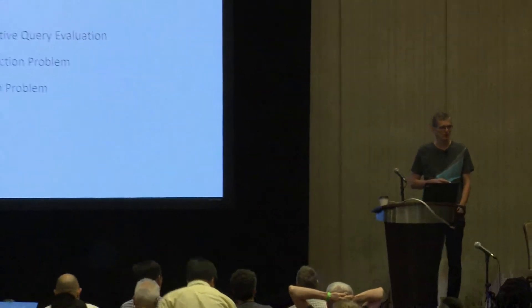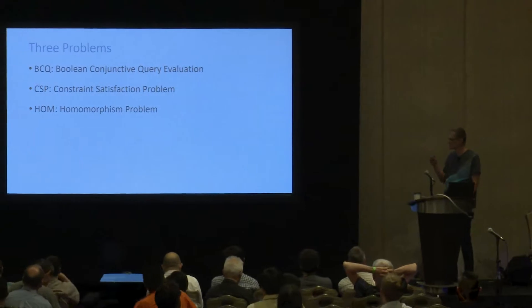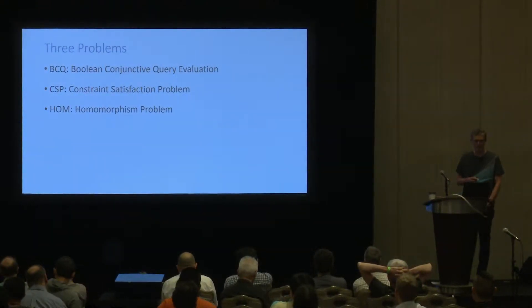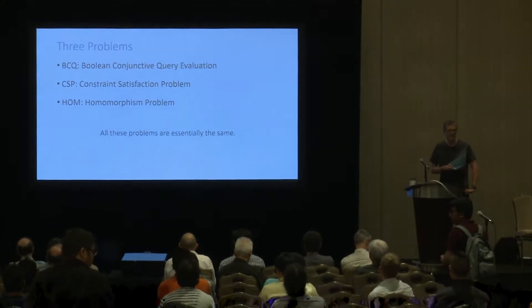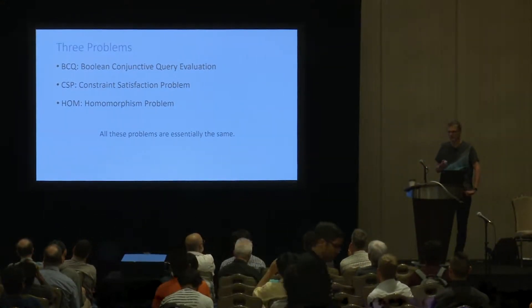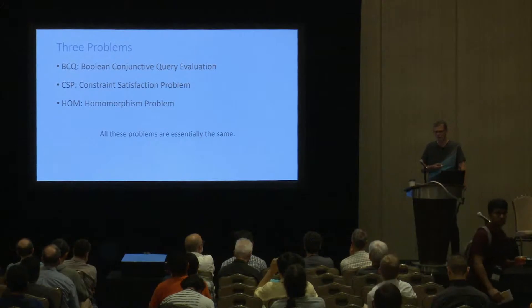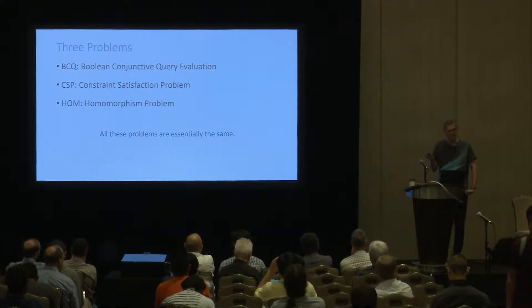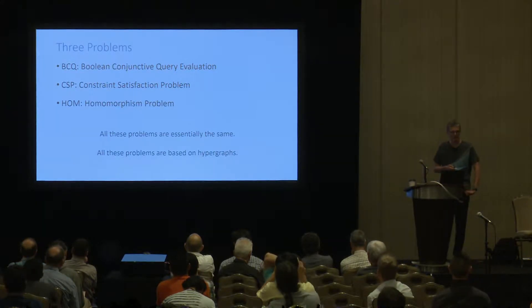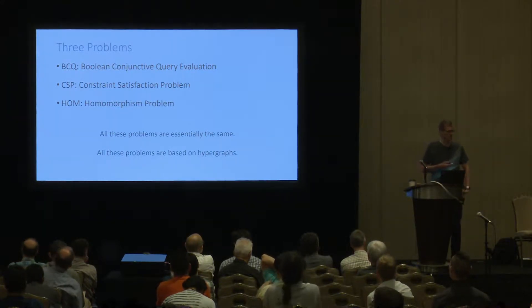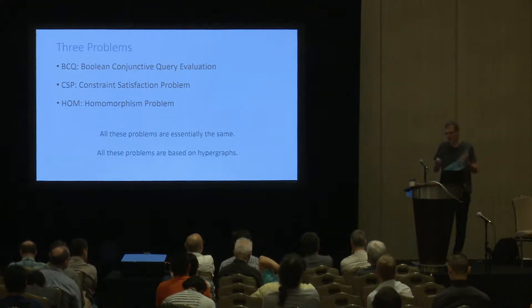Thank you very much for the kind introduction. When we look at three fundamental problems of computer science — conjunctive query evaluation, constraint satisfaction, the homomorphism problem — we notice that essentially they're all the same problem: evaluating first-order formulas built from existential quantification and conjunction. We also notice that the underlying data structure of these problems are hypergraphs.